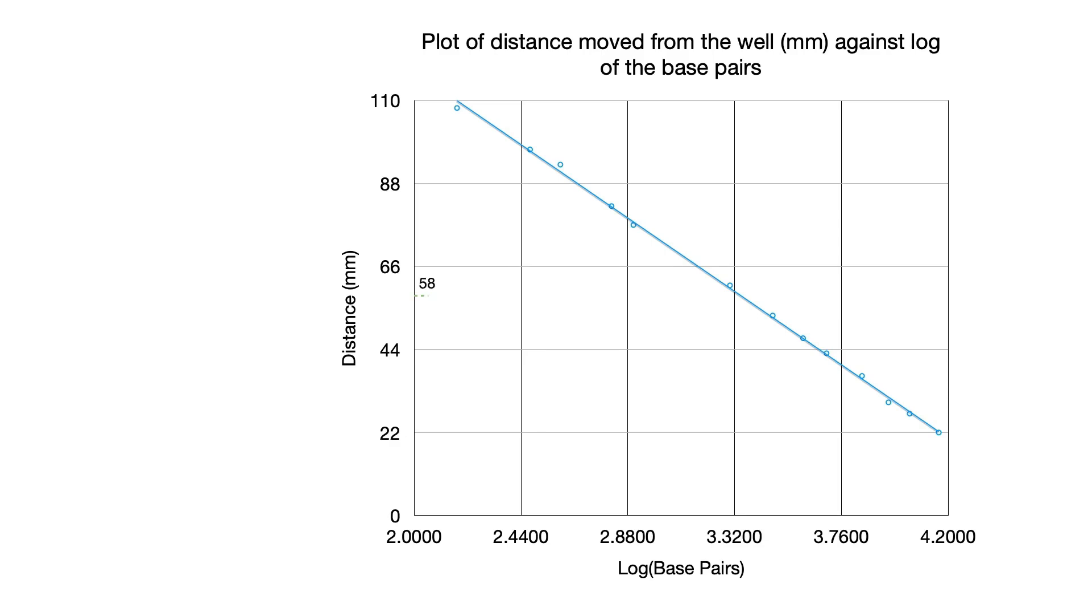If we take our 58 and put a line across and then drop it down, what we get is a value of around about 3.35 and that's the log value. We can then convert that 3.35 log value to its anti-log so that's 10 to the power of 3.35, and in doing that we get the size in base pairs of that unknown band.